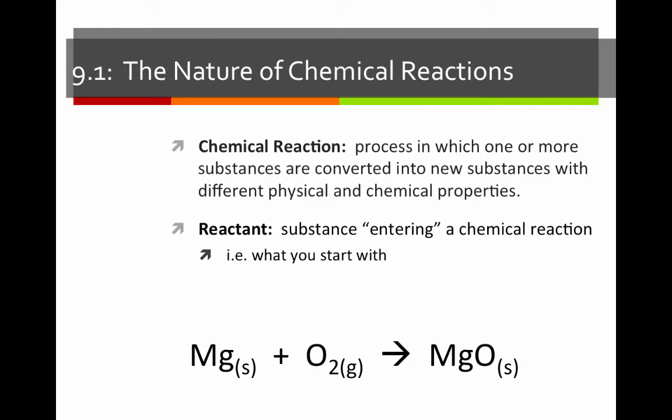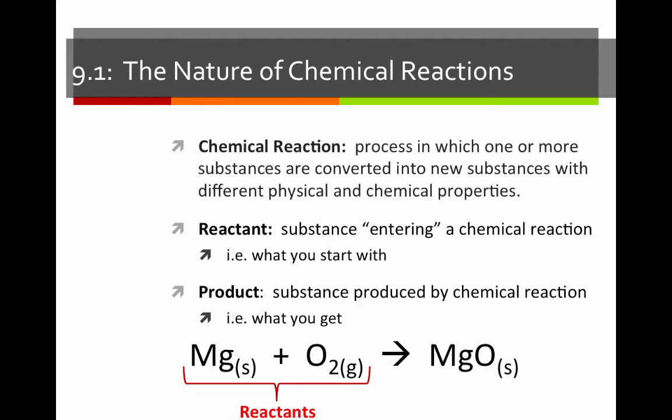A reactant is a substance entering a chemical equation. It's essentially what you start with. In this case, our reactants were magnesium and oxygen. A product is a substance produced by a chemical reaction. It's what you get. Here we produce magnesium oxide.